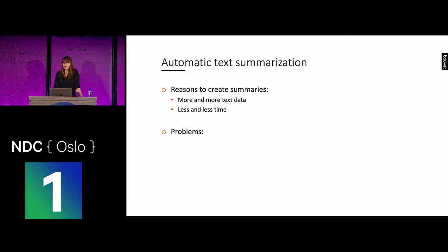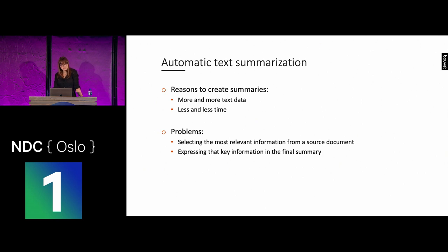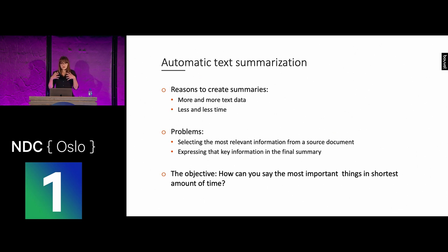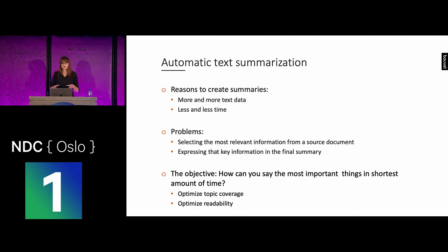The problems we deal with in any kind of summarization, both manual and automatic, are: how do we select the most relevant information from a source document, and once we have it, how do we express it in the final summary? The objective of any summarizer is to write a program that can reduce the size of a text while preserving all the main points. What we're trying to optimize with any summarizer is topic coverage — does the summary incorporate all the main topics — and readability — does the summary flow in a logical way that we can actually read and understand?